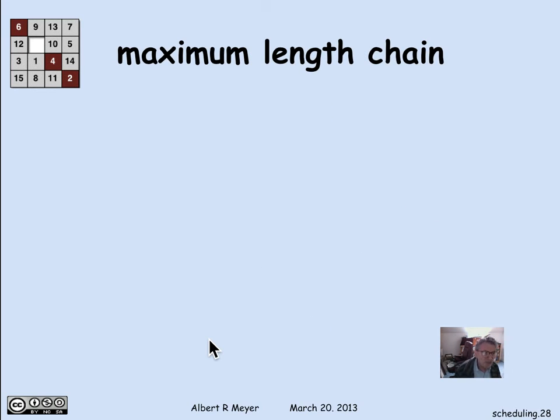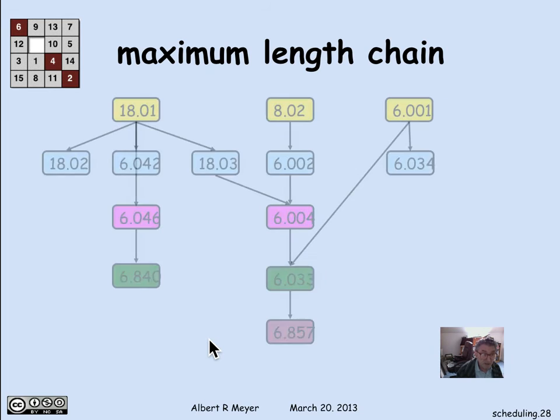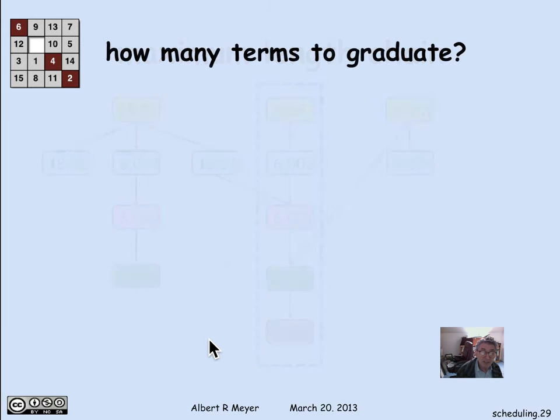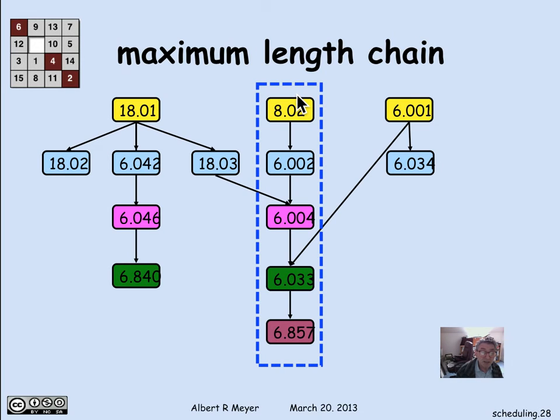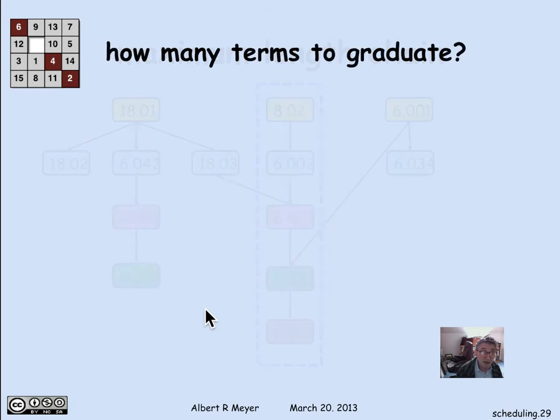But maximum length chains, chains that are as full as possible, are important theoretically. And so this, in particular, is a maximal length chain. The longest chain here is of length five. Now, it's not the only one. There's another chain of length five here, if you look for it. But no chain is of length longer than five, and there is one of length five.